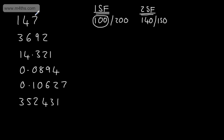The 7 after is greater than 5, so to the nearest ten — the second significant figure — we're going to have 150. If we look at 3,692 to one significant figure, that's rounding to the nearest 1,000.